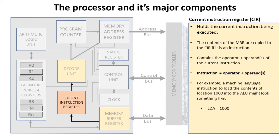Finally, the current instruction register holds the actual instruction which is currently being decoded and executed. The contents of the memory buffer register are copied to the current instruction register. If it is an instruction, it is split into an opcode and an operand, and together these make up an instruction.